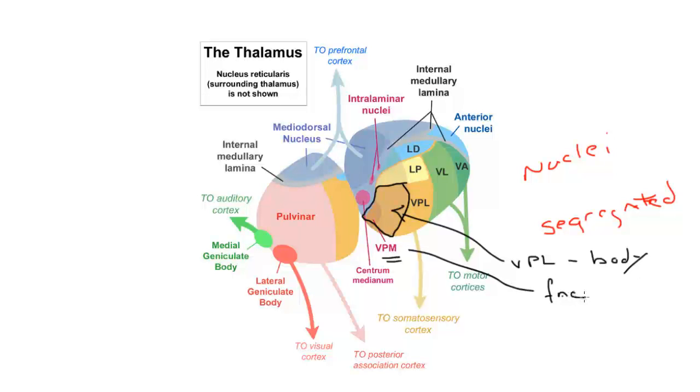The nomenclature is fairly straightforward for most nuclei. The first letter—such as ventral for VPL and VPM, lateral for LP, medial for medial dorsal, or anterior for the anterior nuclei—tells you what group of thalamic nuclei you're dealing with.